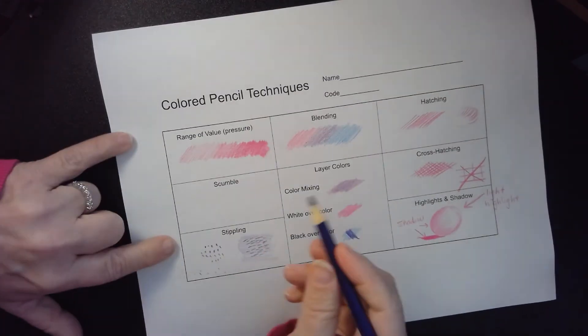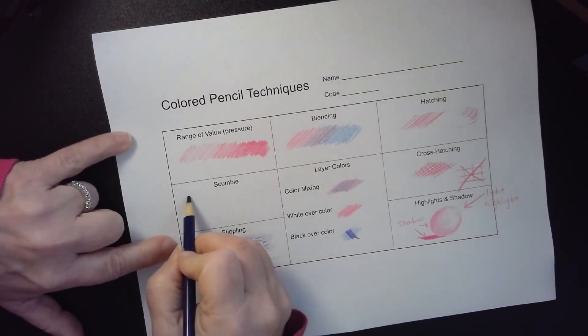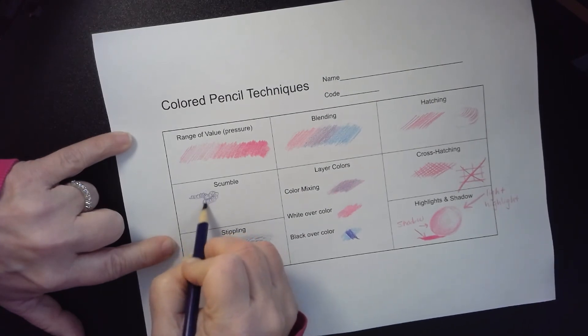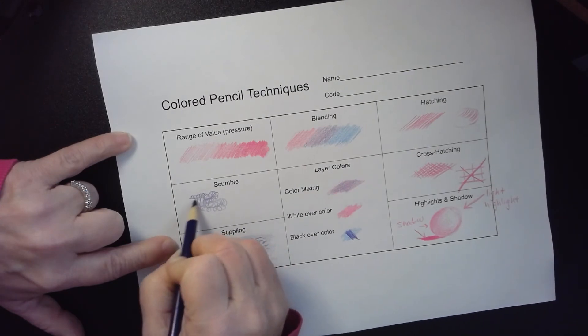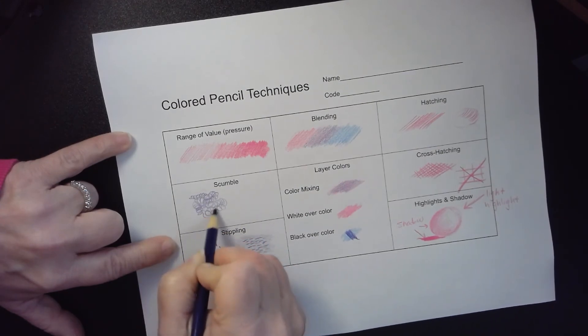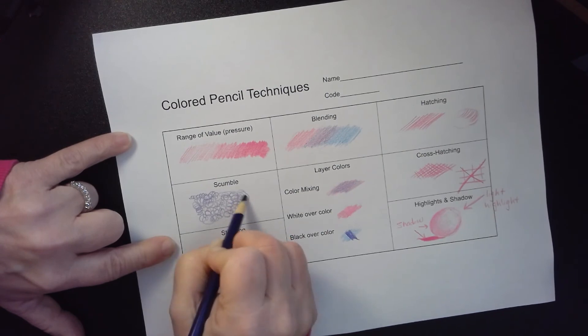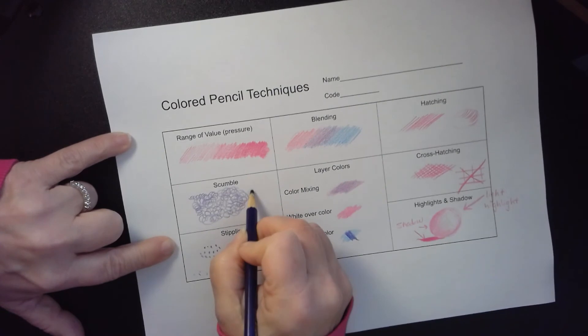And the last one is probably my favorite—this is scumbling. Scumbling is coming around in these very small tight circles and they're random. You keep changing the direction that you're working on, round and round like this. So it's just very relaxing to do.